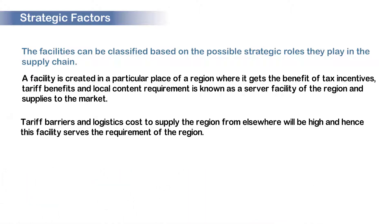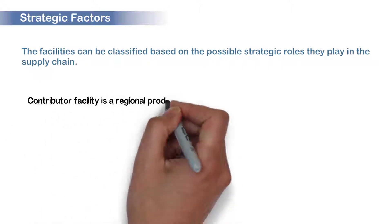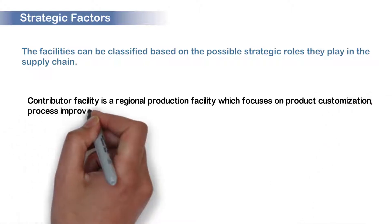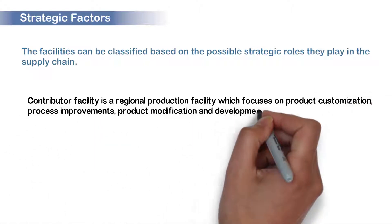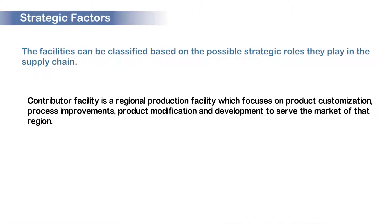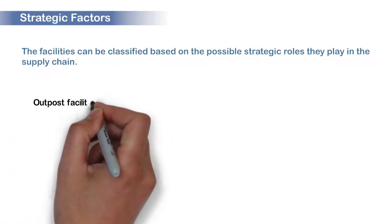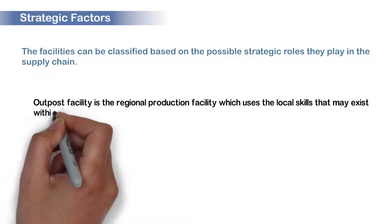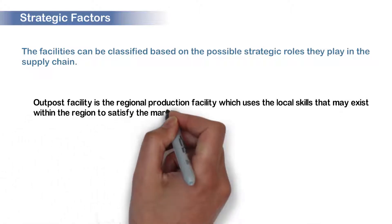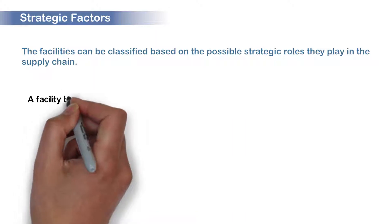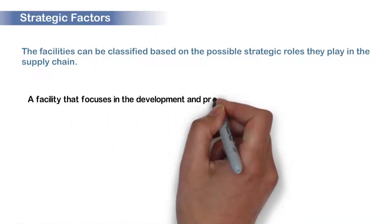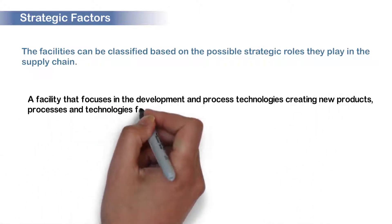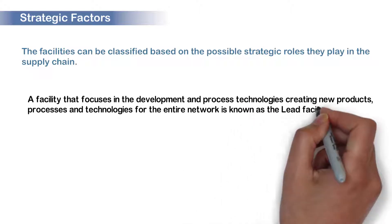Tariff barriers and logistic cost to supply the region from elsewhere will be high and hence the facility serves the requirement of the region. A contributor facility is a regional production facility which focuses on product customization, process improvements, product modification, and development to serve the market of that region. An outpost facility is a regional production facility which uses the local skills that may exist within the region to satisfy the market requirements. A facility that focuses on the development and process technologies, creating new products, processes, and technologies for the entire network is known as the lead facility.